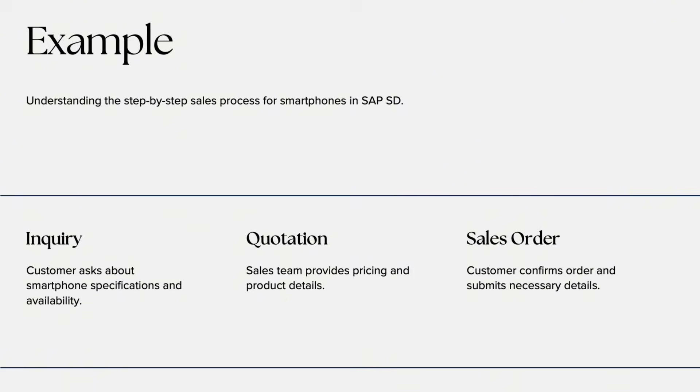Final tips: always focus on understanding the business logic, not just transactions. Practice core processes: VA01 for Sales Order, VL01N for Delivery, and VF01 for Billing. Learn how SD interacts with MM and FI — it's a big advantage in interviews. Use sandbox systems or demos to simulate the full order-to-cash cycle. If you found this guide helpful, hit the like button, subscribe for more SAP training videos, and comment below if you'd like a full SAP SD configuration series. In the next videos, we'll explore master data, pricing conditions, and the order-to-cash configuration in detail.